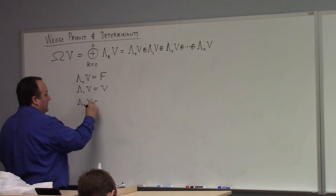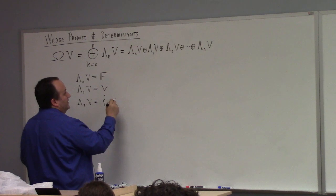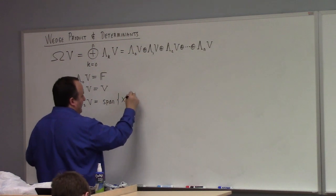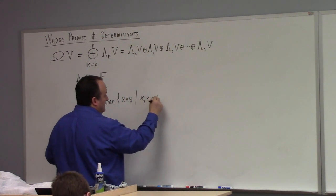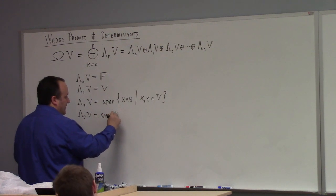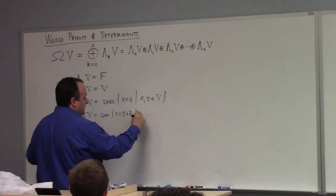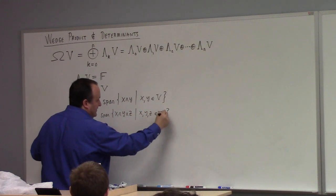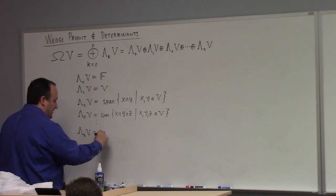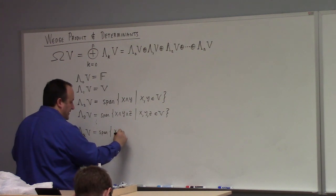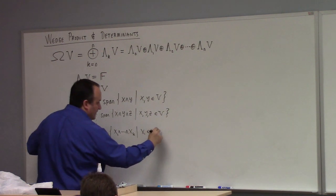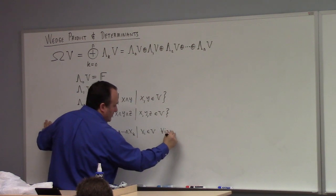Lambda_2(V) is things of the form — it's the span of x wedge y, such that x and y are vectors. Lambda_3(V) is the span of x wedge y wedge z, such that x, y, and z are vectors. So lambda_k(V) is the span of x_1 wedge ... wedge x_k, such that x_i is an element of V for all i from 1 to k.